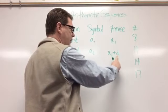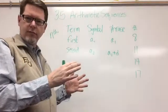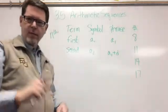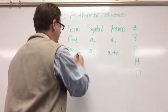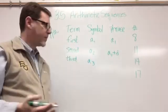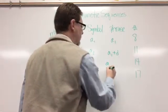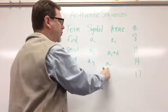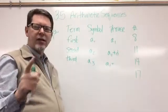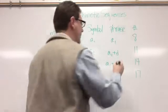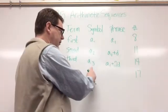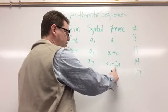In this case, the common difference is three, so if I take a sub one, which is eight, plus three, I get eleven. The third term is going to be a sub three. I took a sub one — I'm always going to start with a sub one — and added two times the common difference. To get from eight to fourteen, that's adding six, which is two times three. So a sub three equals a sub one plus two times the common difference.